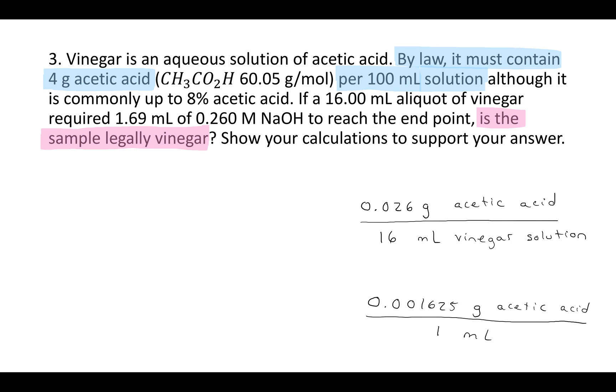And so we know that we have, if you divide those, that you'll have 0.001625 grams of acetic acid for every 1 milliliter. Multiply that by 100, and that means that you'll have 0.1625 grams for every 100 milliliters. That's less than the 4 grams that you need for it to be legal. And so this factory that produced this vinegar has been illegally using too little acetic acid and basically just selling people water.